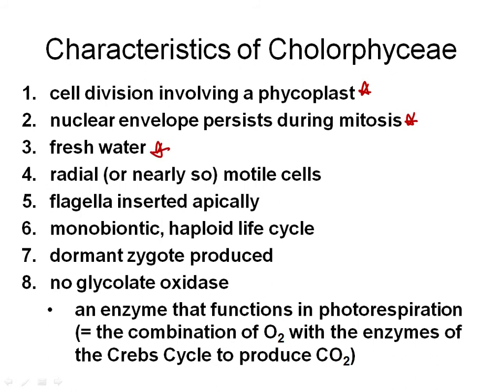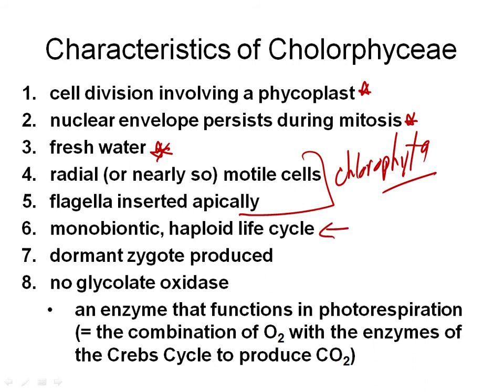Chlorophyceae are pretty much exclusively freshwater organisms. They have isokont cells with flagella inserted apically, which are characteristics of the Chlorophyta division. Monobionic haploid life cycles are also characteristic of the Chlorophyceae, and closely related to that is the dormant zygote. The zygote is produced, undergoes a period of dormancy before meiosis, preserving the organism in a resting state.